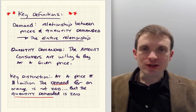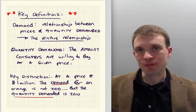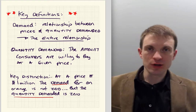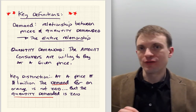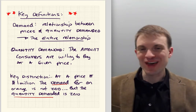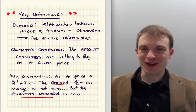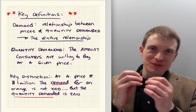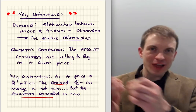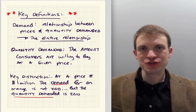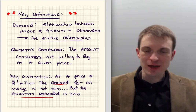By quantity demanded, we mean the amount consumers are willing and able to buy at a given price. For every price there's a quantity demanded, and for every quantity demanded there's a price. For a given pair, we have one particular price and its associated quantity demanded, and a collection of such pairs gives us our demand relationship.